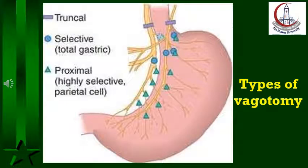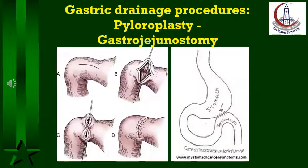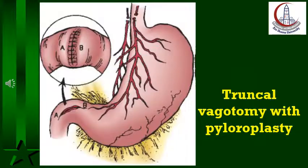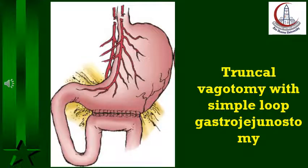This diagram demonstrates the different types of vagotomy. This diagram demonstrates the two types of gastric drainage procedures: truncal vagotomy with pyloroplasty, and truncal vagotomy with gastrojejunostomy.